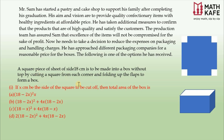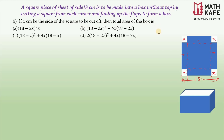The main question is: a square piece of sheet of side 18 centimeters is to be made into a box without a top by cutting a square from each corner and folding up the flaps to form a box. For the first question, if x is the side of the square to be cut off, we need to find the dimensions — length, breadth, and height — before finding the surface area.